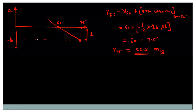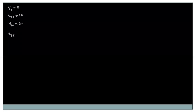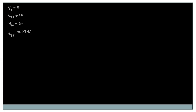For the graph, you can use graph paper or draw the graph on normal pages. Just take the proper scale. First note down the known values: V0 is 0, V30 is 30, V60 is 60, and V75 is equal to 52.5.